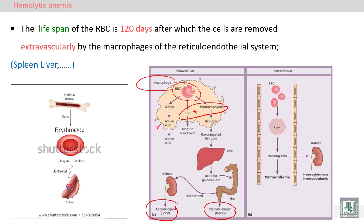Amino acids from globin are released and used for new globin synthesis. This is the normal extravascular destruction of red blood cells after 120 days. Intravascular destruction means destruction of red blood cells inside the blood vessels — this is an abnormal lysis of red blood cells inside the blood vessels, leading to release of hemoglobin. Hemoglobin in the blood is called hemoglobinemia.